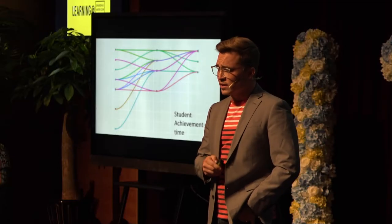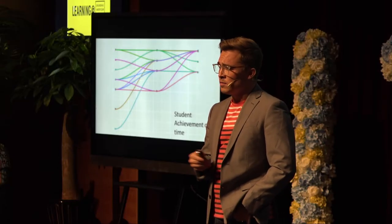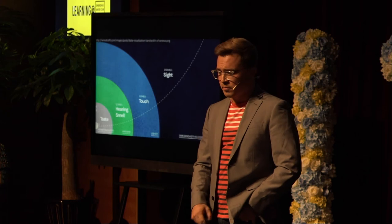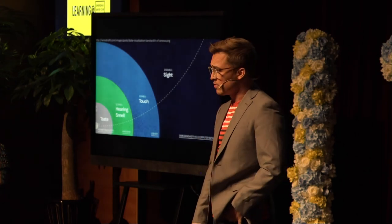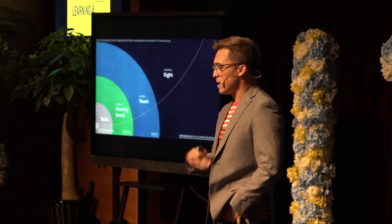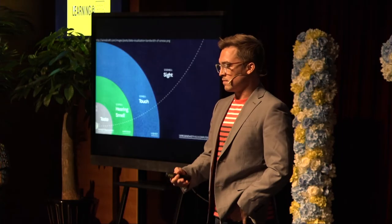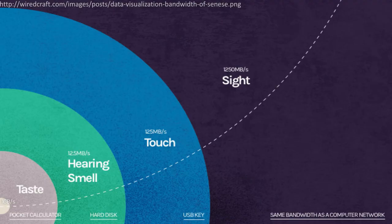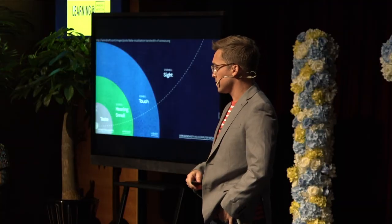I think the reason this is working is best illustrated in a visual from Danish physicist Tor Noritrandist, who noticed that the bandwidth of the senses shows that our eyes have the same bandwidth as a computer network. And if we can harness that power, the patterns within the numbers, we form new relationships with those numbers in ways we couldn't in the past.